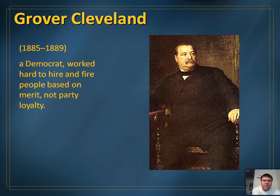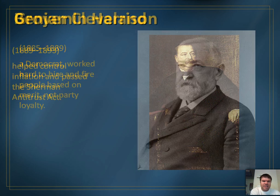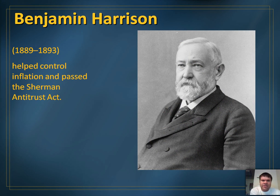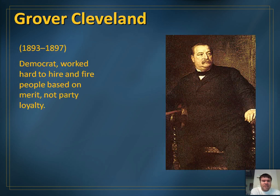Grover Cleveland, after Chester A. Arthur, was a Democrat — the first Democrat elected to the presidency after the Civil War — and he worked hard to hire and fire people based on merit, not party loyalty. He is also the only president to ever be elected for two separate terms. He served four years, was beaten in the 1889 election by Benjamin Harrison, who passed the Sherman Antitrust Act to keep businesses from growing into monopolies, but then Grover Cleveland defeated Harrison and served a second term from 1893 to 1897, again hiring and firing based on merit, not party loyalty.